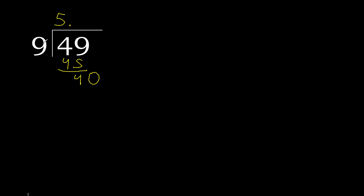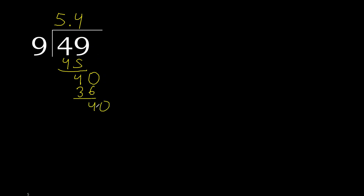Point 49. Multiplied by 5 is greater. Multiplied by 4 is 36. Subtract, complete. 0. Point 49 multiplied by 4. Subtract, complete.